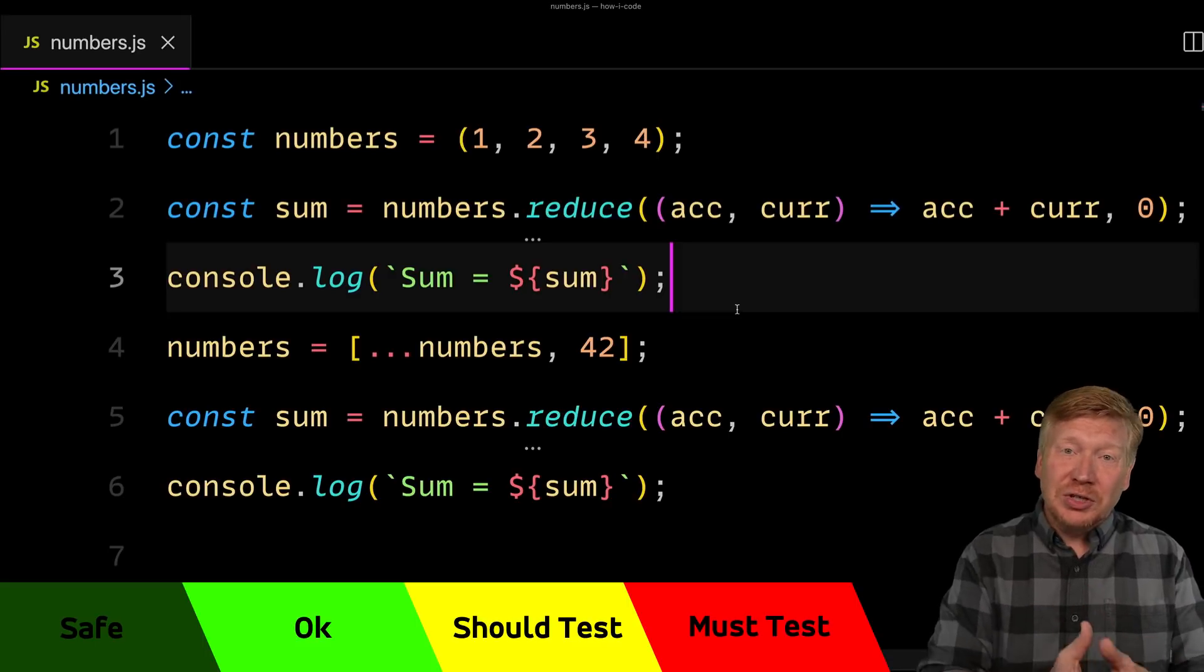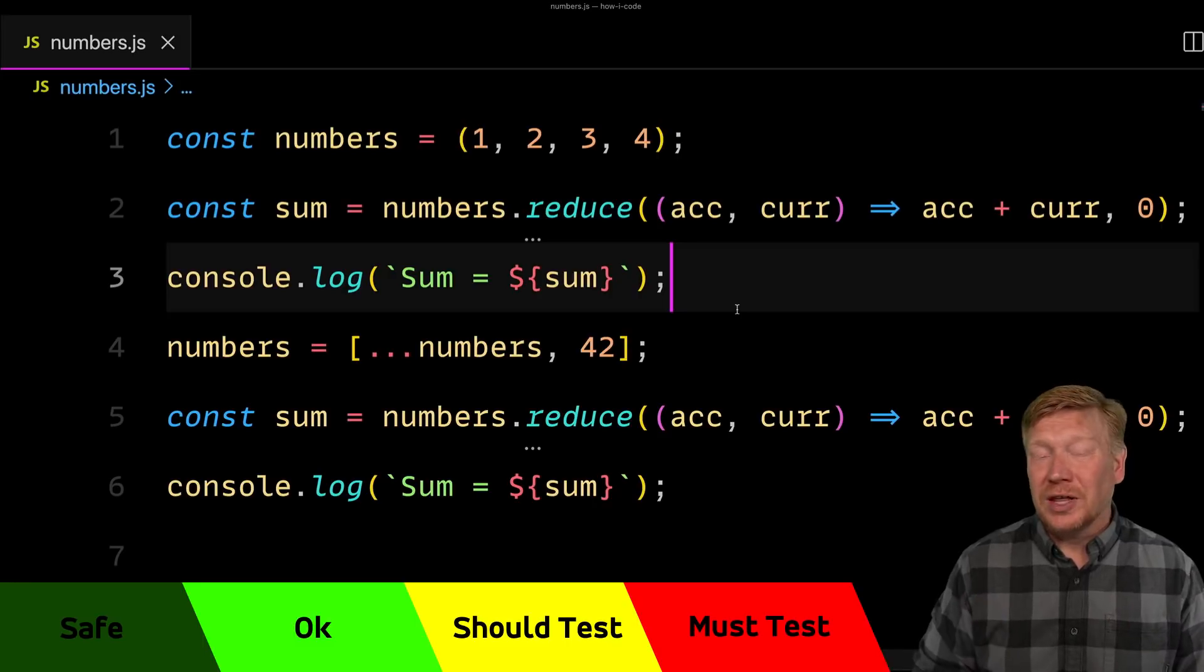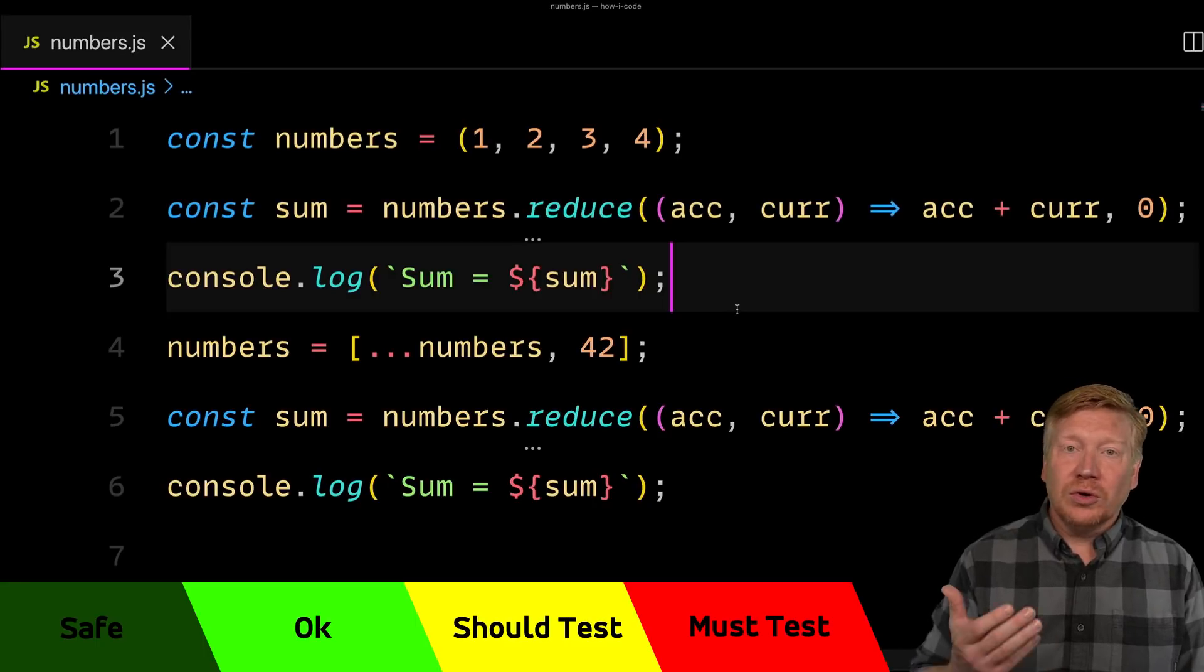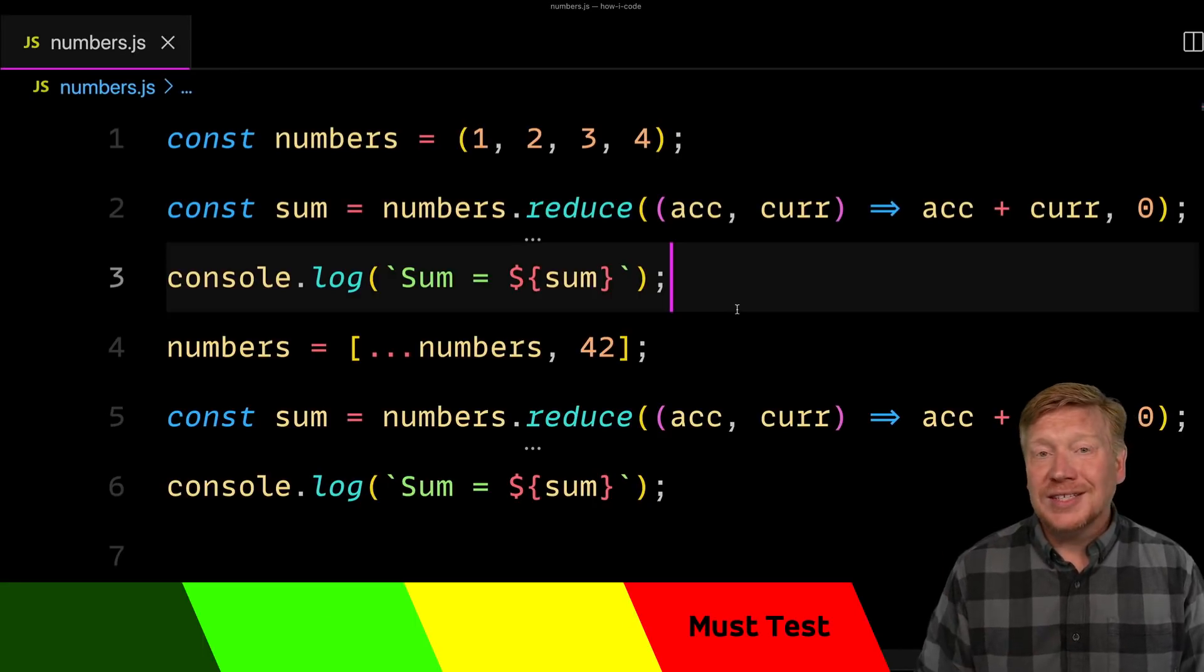Sometimes you can feel really good about your ability to write 10 lines of code without a bug. Other times, you're really cautious, you might be only writing one or two lines of code. And it's really just up to you and your subjective measures. But right now, of course, we are in the red because our code isn't working.